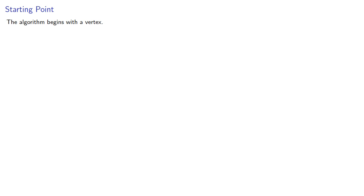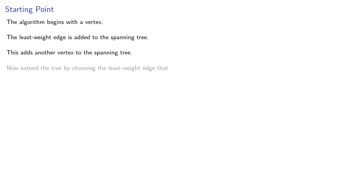The algorithm begins with a vertex. The least weight edge is added to the spanning tree. This adds another vertex to the spanning tree. Now extend the tree by using the least weight edge that has one vertex in the tree and does not form a cycle.